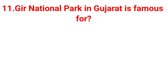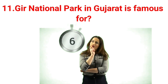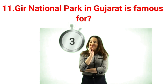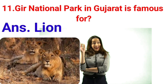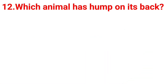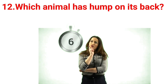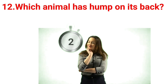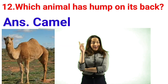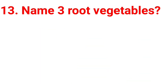Gir National Park in Gujarat is famous for which animal? Answer is Lion. Which animal has a hump on its back? Answer is Camel.